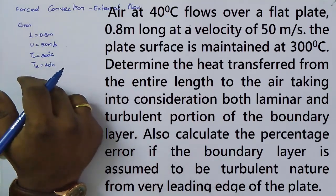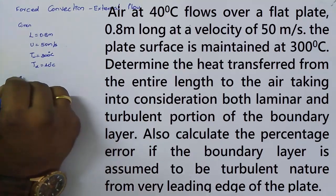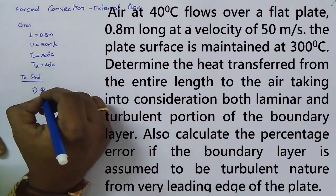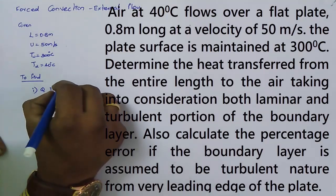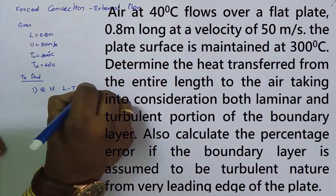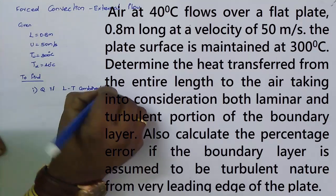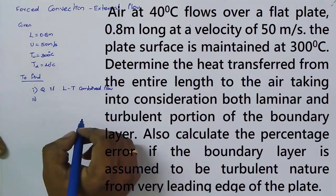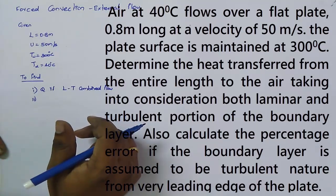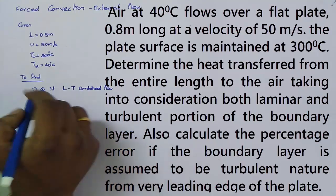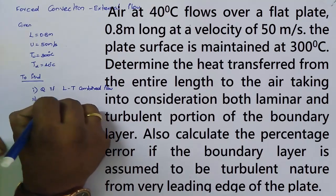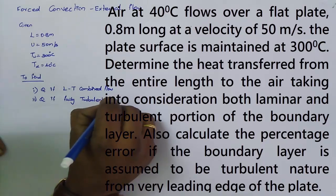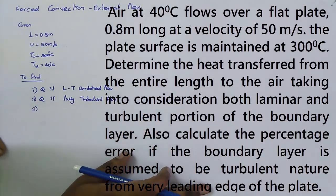The air temperature T∞ = 40°C. To find: Case 1 — heat transfer Q assuming combined laminar-turbulent flow throughout the plate length. Case 2 — heat transfer Q assuming fully turbulent flow from the leading edge. Then find the percentage error between the two cases.